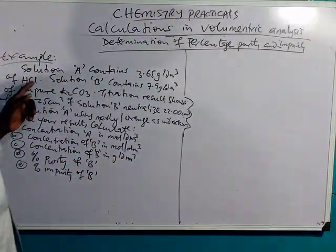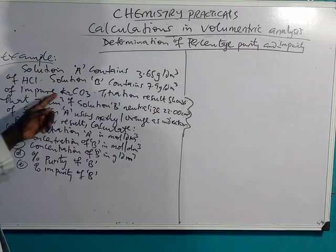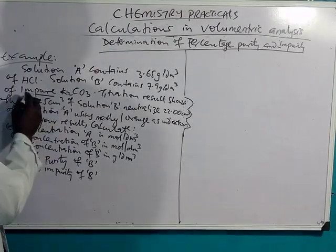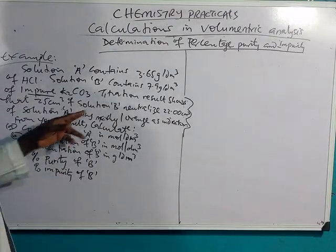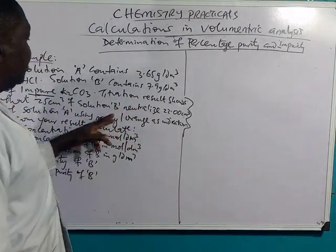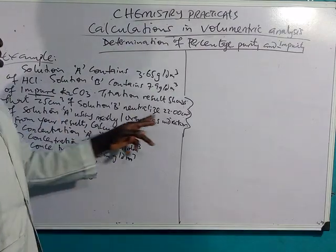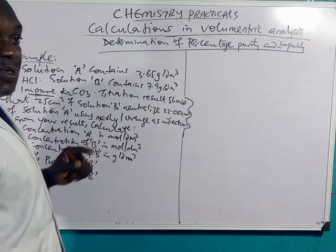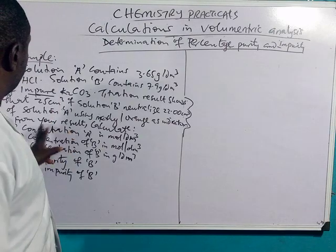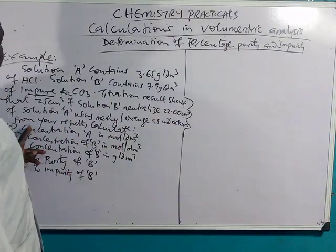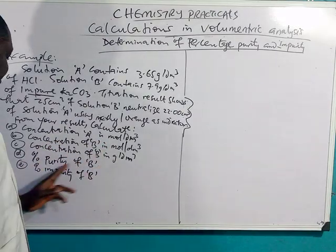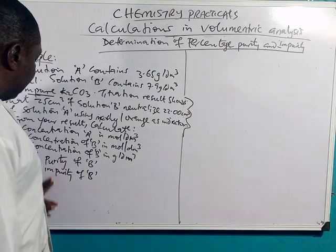Look at a typical question. Solution A contains 3.65 grams of HCl. Solution B contains 7.9 grams per dm³ of impure potassium carbonate. Titration results show that 25.0 cm³ of solution B, which is actually the volume of your pipette, neutralizes 22.0 cm³ of A, which is the average volume of acid from concordant titration results. We will use methyl orange as indicator. Calculate: concentration of A in mol/dm³, concentration of B in mol/dm³, concentration of B in g/dm³, and the percentage purity of B.